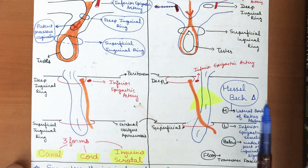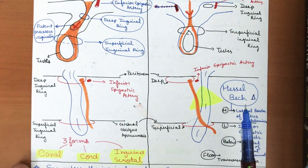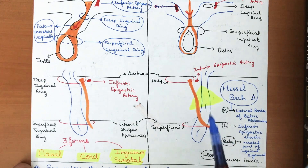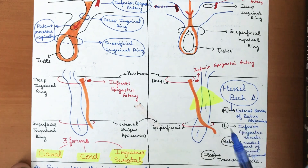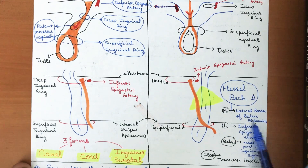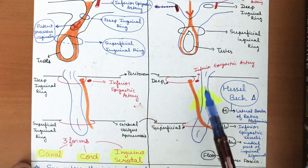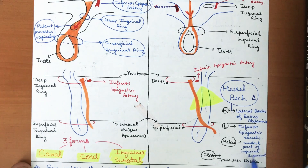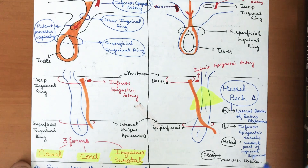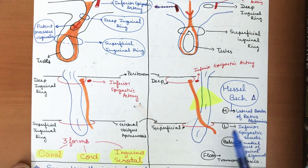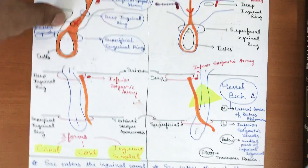Hesselbach's triangle is the triangle through which the direct hernia sac passes. Its boundaries are: medially — the lateral border of the rectus abdominis muscle; laterally — the inferior epigastric vessels; inferiorly — the medial part of the inguinal ligament; and the floor is formed by the transverse fascia.